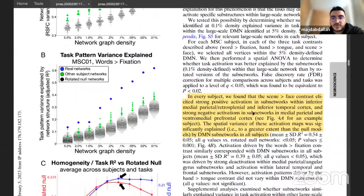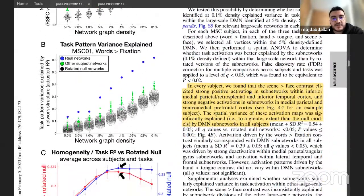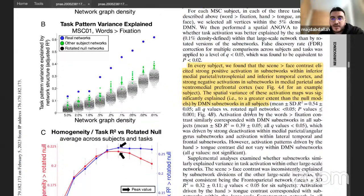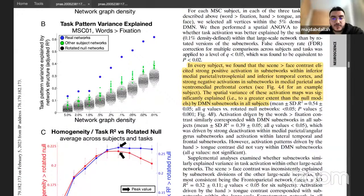Specifically, in every subject, the scene versus face contrast elicited strong positive activations in subnetworks within the inferior medial parietal, retrosplenial, and inferior temporal cortex, and strong negative activations in the medial parietal and ventromedial prefrontal cortex. The spatial variance of this activation map was significantly explained by all DMN subnetworks.